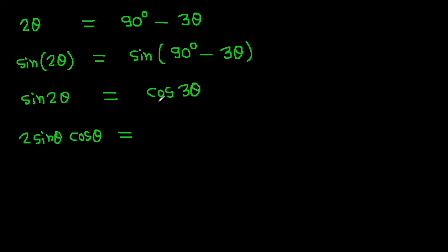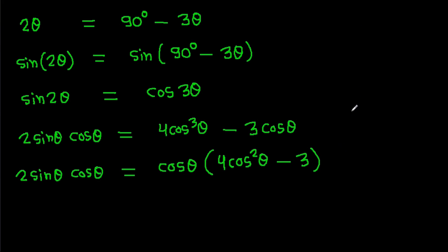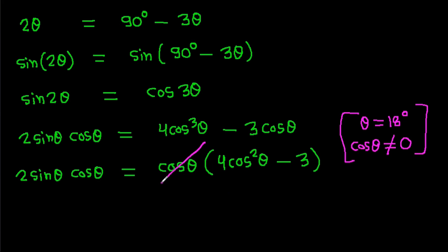And sin 2 theta is 2 sin theta cos theta, which equals cos 3 theta, and cos 3 theta is 4 cos cubed theta minus 3 cos theta. So 2 sin theta cos theta equals 4 cos cubed theta minus 3 cos theta. Here we can take cos theta common, giving 4 cos squared theta minus 3. Since theta is 18 degrees, cos theta cannot be zero, so we can cancel cos theta, giving 2 sin theta equals 4 cos squared theta minus 3.